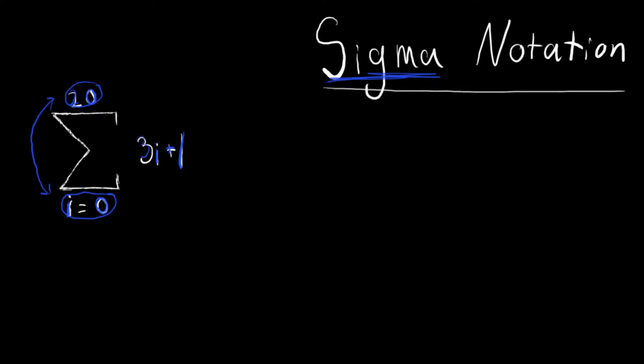I know it sounds confusing. So what this means is it goes everywhere from 3(0)+1, plus 3(1)+1, plus 3(2)+1, all the way up until 3(20)+1.